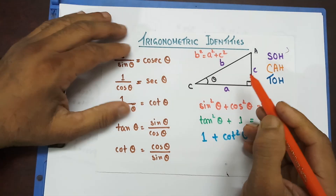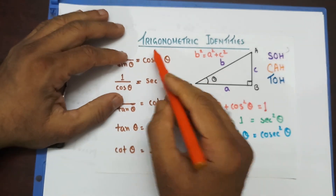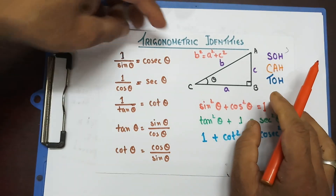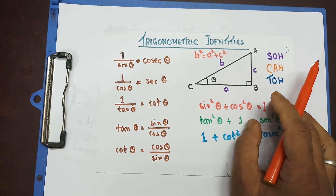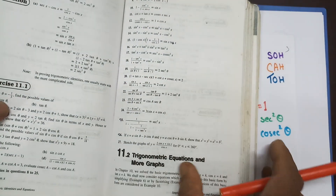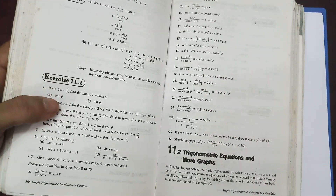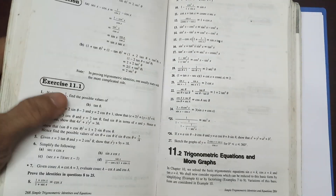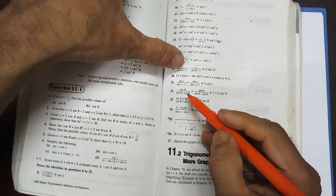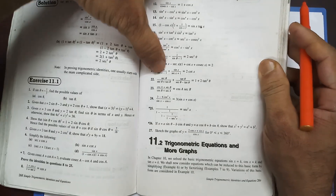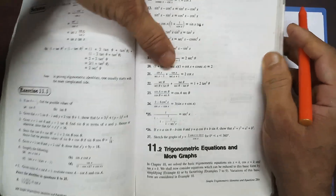Welcome. On today's lecture, I'll again prove the trigonometric identities from this book, New Additional Mathematics, Exercise 11.1. I have done up to question 21 in my last video. So today I'm going to do from question 22.